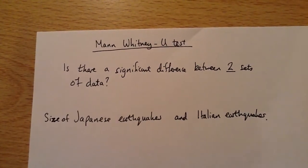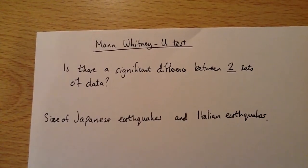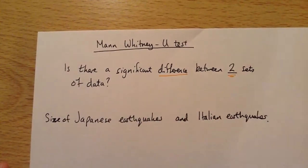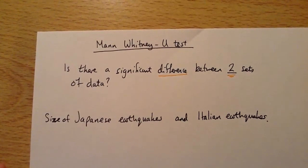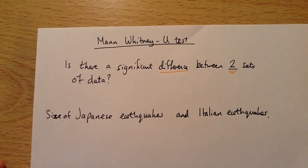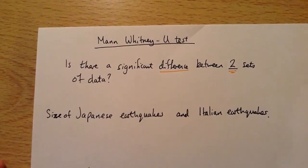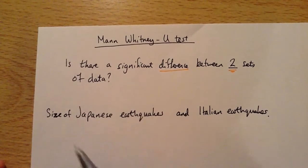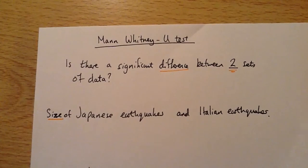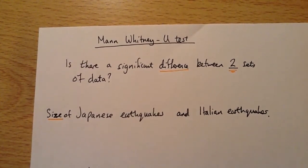Welcome to this tutorial on the Mann-Whitney-U statistical test. The Mann-Whitney-U test is used in geography and particularly looks at whether there is a difference between two sets of data. We'll look at an example of earthquakes occurring at a plate margin in Japan and one in Italy, to see if there is a difference in the size of earthquakes at each location.